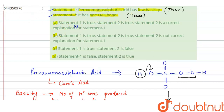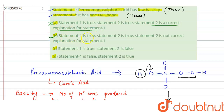Option A will be wrong because it states that statement 2 is a correct explanation for statement 1, but it is not. Therefore, option B is the right answer: statement 1 is true, statement 2 is true, but statement 2 is not the correct explanation for statement 1.